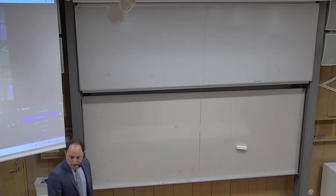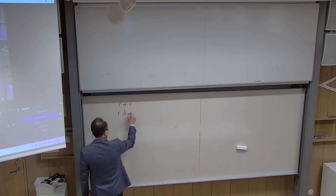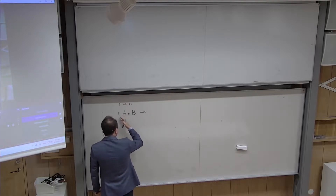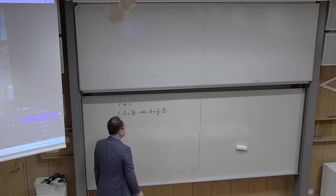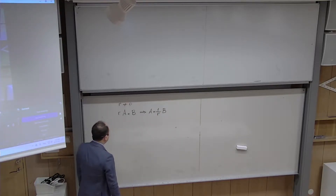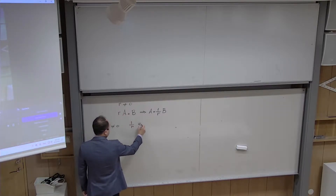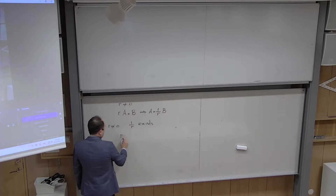So the question is: I have a number R which I know is not zero, R is multiplied by A, and it equals B. From now on I want to use it easily, so you can just divide everything by R and write 1 over R times B. And it makes sense because R is not zero, so 1 over R exists — as long as the number in the denominator is not zero.